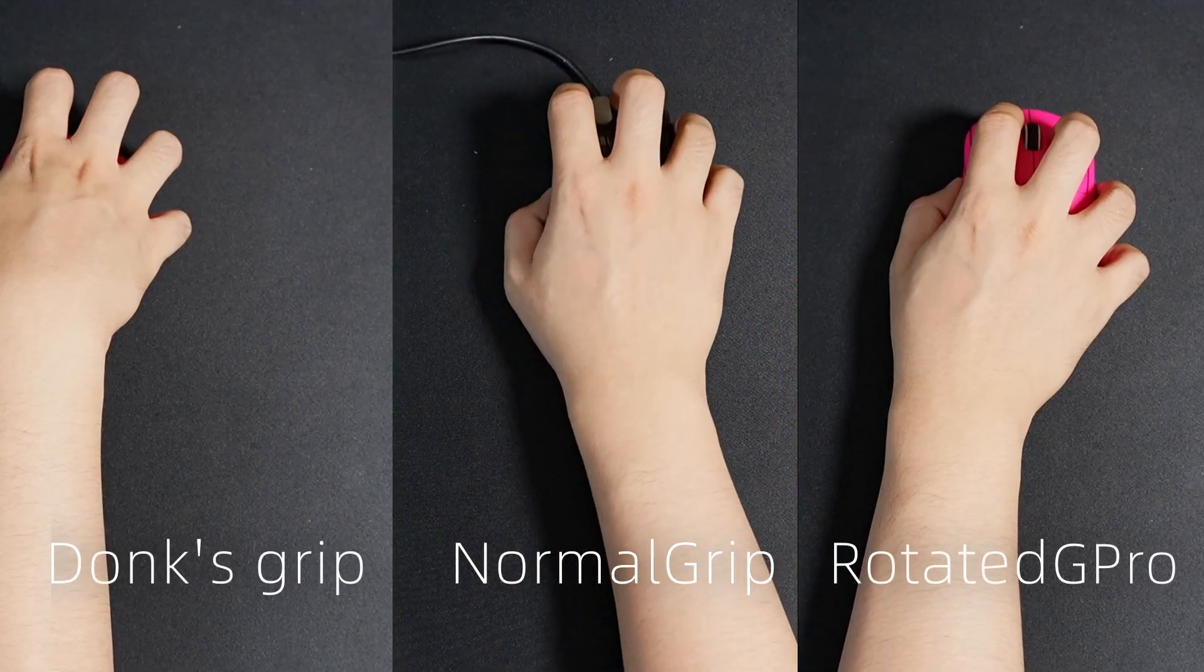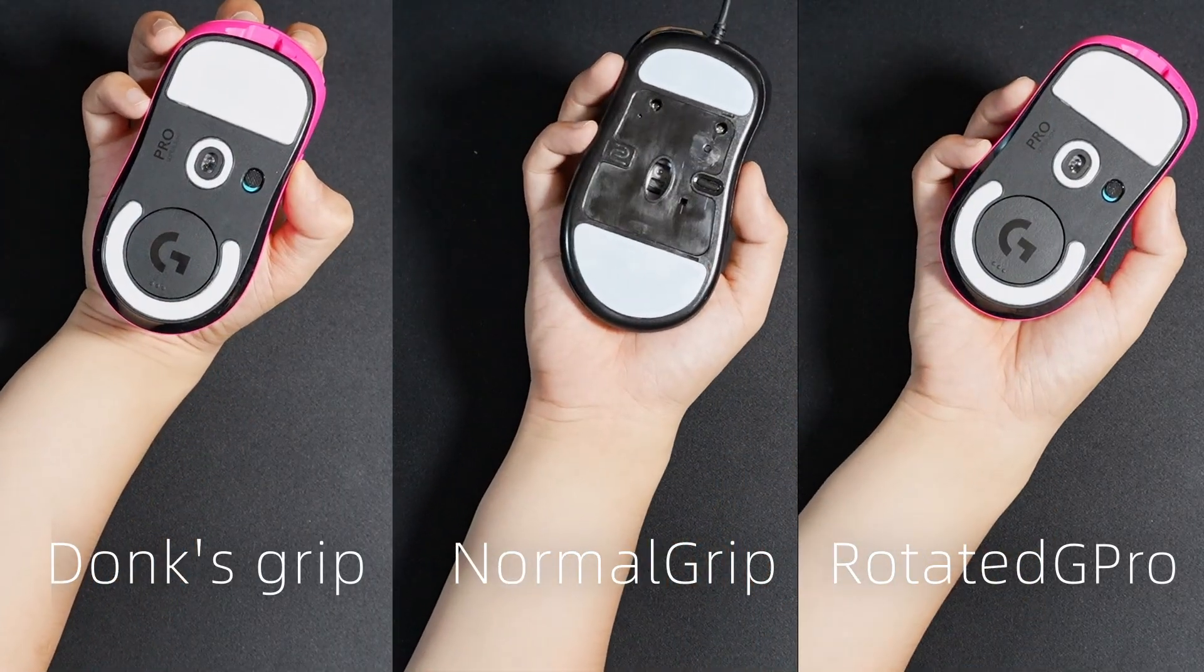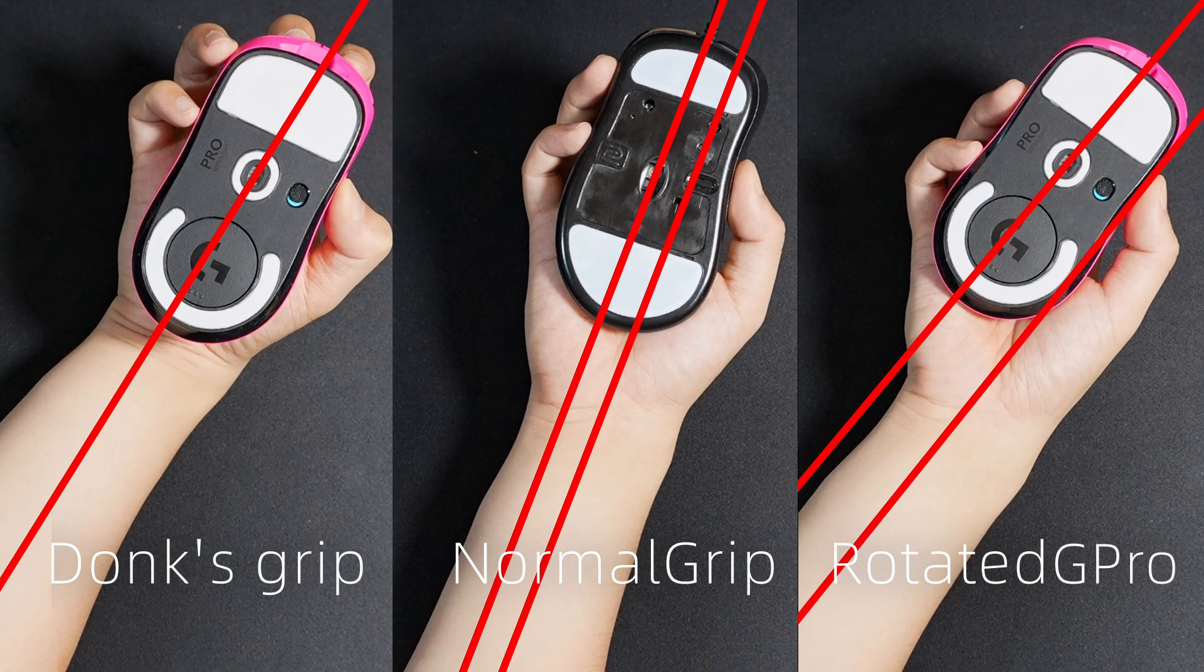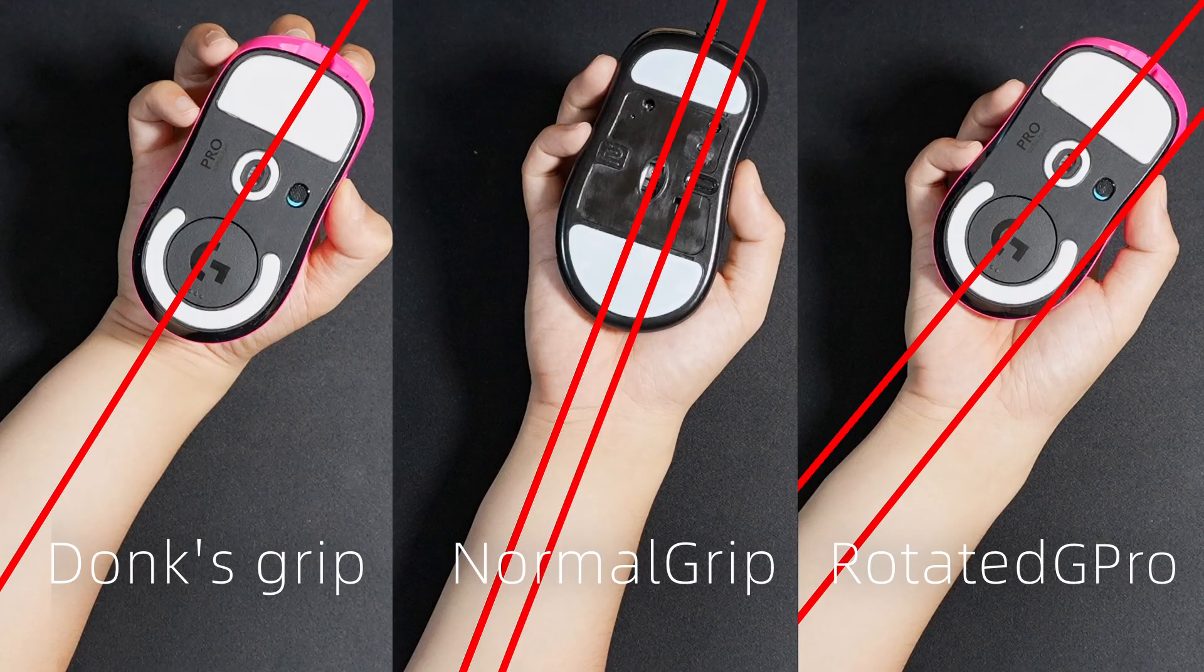Flip the mice over and take a look at the sensor. With Dong's grip or the EC2A, the sensor is aligned with my arm. So when I move my arms, the sensor knows exactly where I'm going.